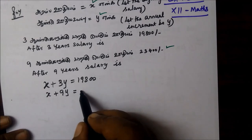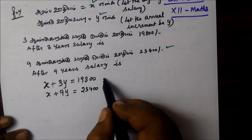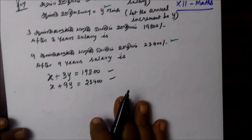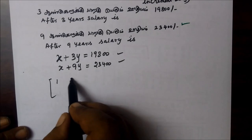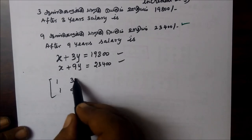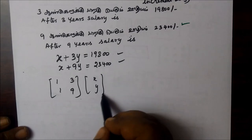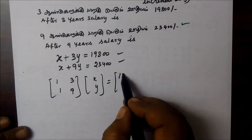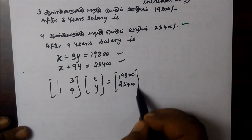So we will form the equation now. We will do the matrix. The matrix is: 1, 3 in the first row and 1, 9 in the second row. The variables are x, y, and the constants are $19,800 and $23,400.